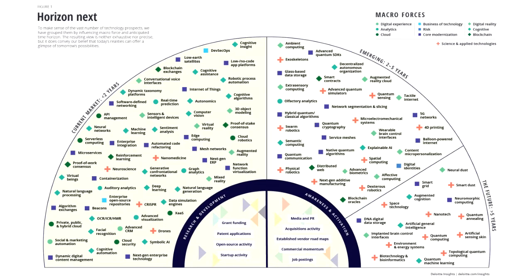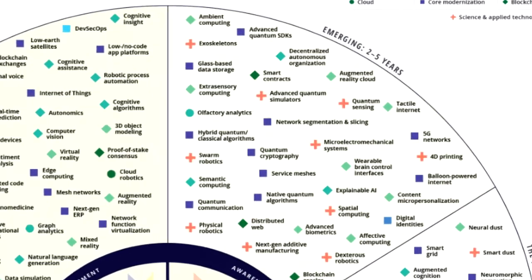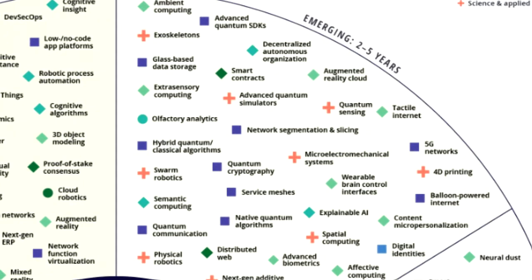If you move into the next two to five years zone, you will find things like smart contracts, which are related to blockchain, quantum sensing, and the quantum computing area. You could also find distributed web, that is semantic computing, olfactory analysis, and ambient computing. These are different emerging trends, including 5G networks and 4D printing, considered to be emerging in the next two to five years.